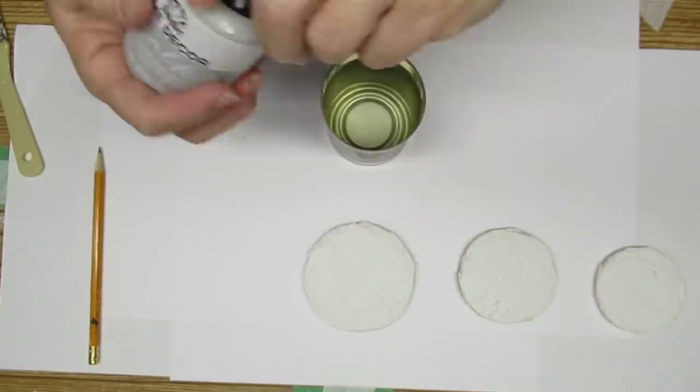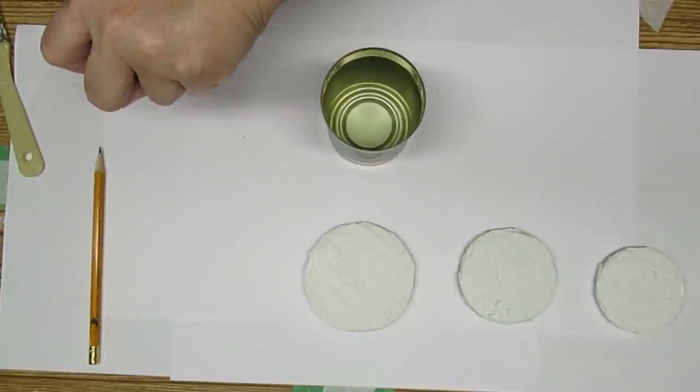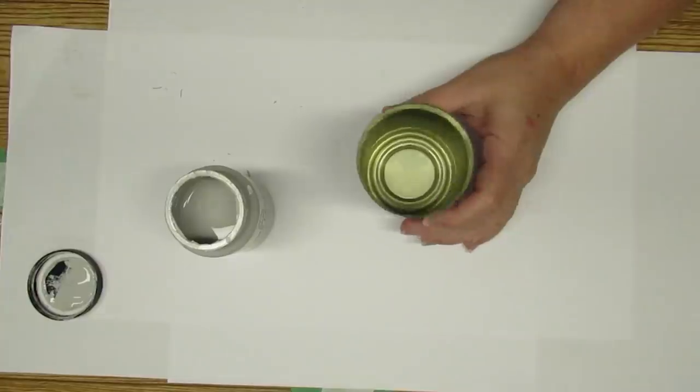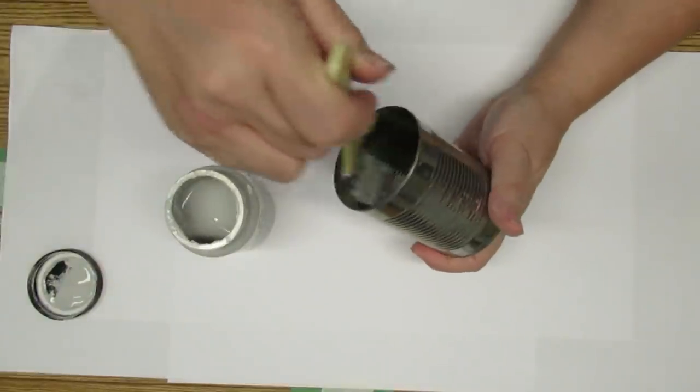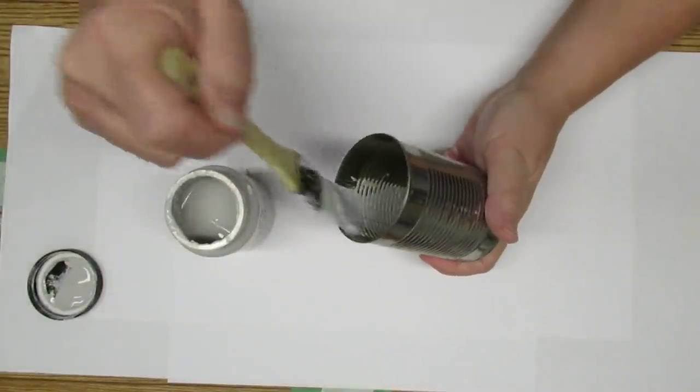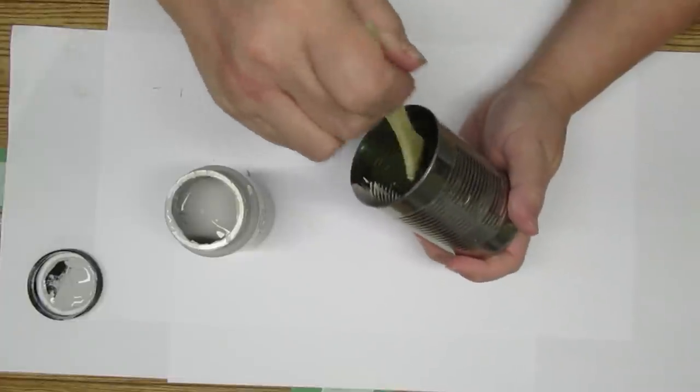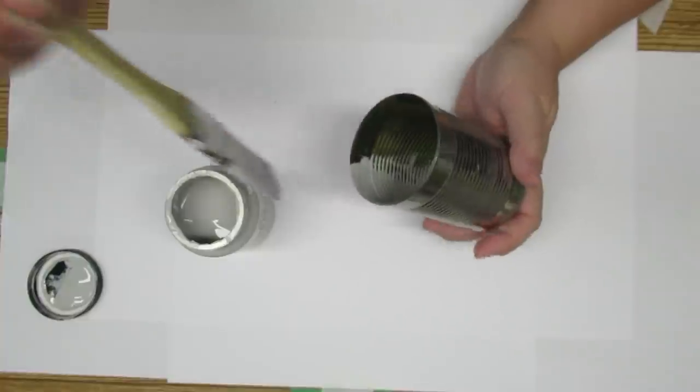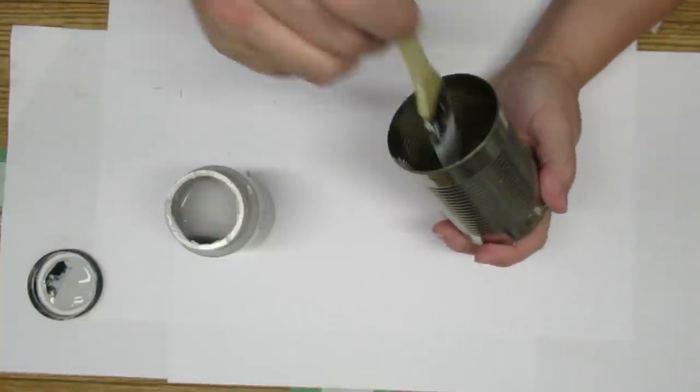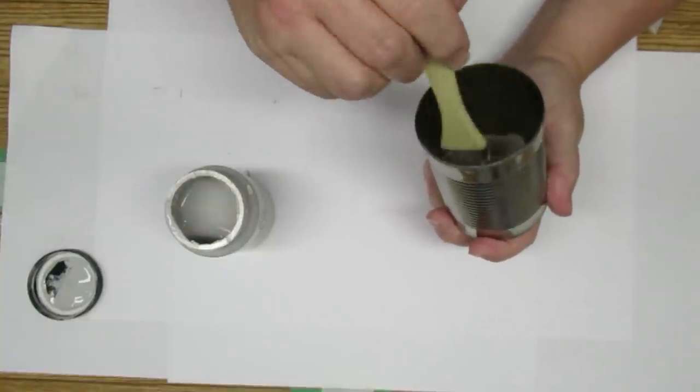For the cans, I'm going to be using Folk Art Home Decor Chalk Paint in the color Parisian Gray. It's a really pretty light gray. I'm going to do the inside of the cans as well so when you open up the lid, it looks a little bit more complete and doesn't look exactly like a tin can. I'll do one coat on the inside and one coat on the outside.